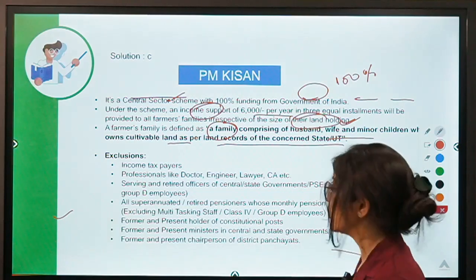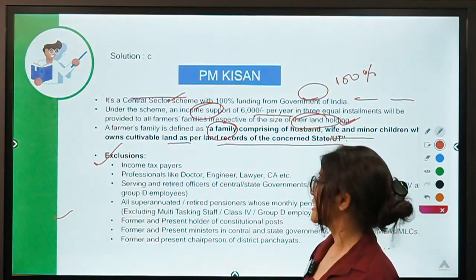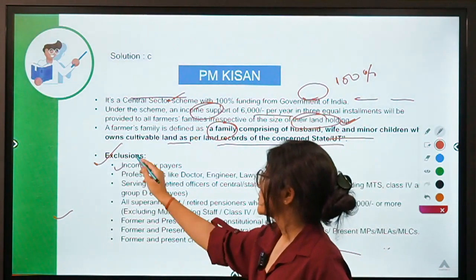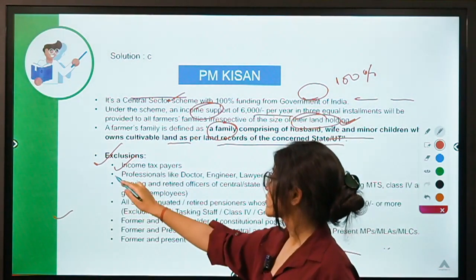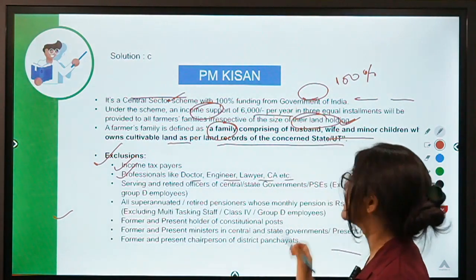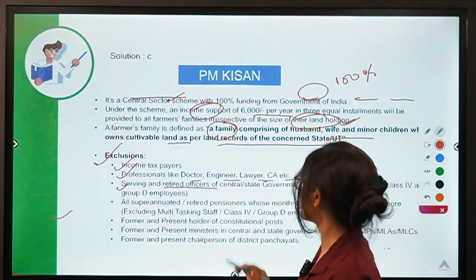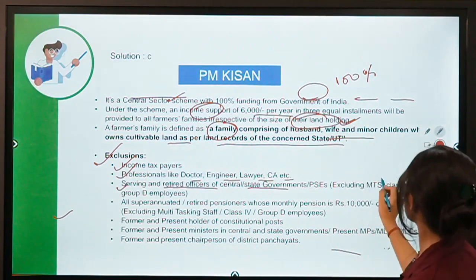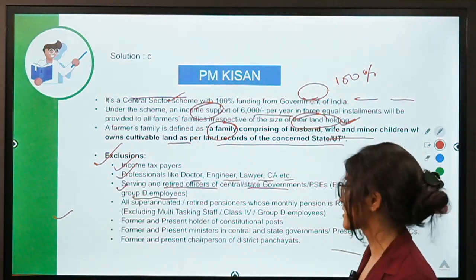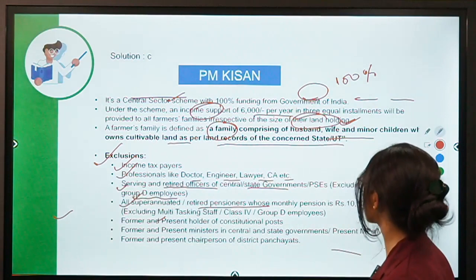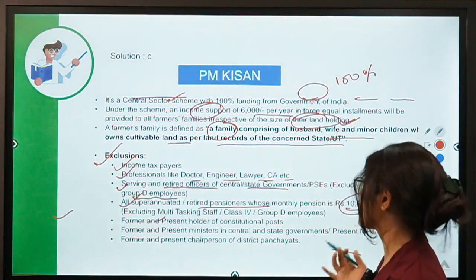There is no limit on landholding. There are certain exclusions under this scheme: income tax payers are not covered, nor are professionals like doctors, engineers, lawyers, and CAs. Serving and retired officers of central and state governments are excluded, except MTS Class 4 and Group D employees — Group D employees will be covered. All superannuated and retired pensioners whose monthly pension is Rs. 10,000 or more are also not covered.